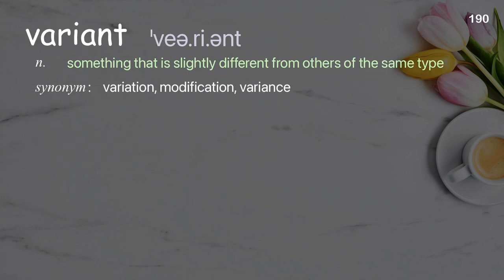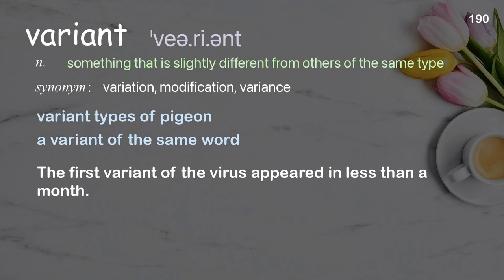Variant: something that is slightly different from others of the same type. Examples: variant types of pigeon, a variant of the same word. The first variant of the virus appeared in less than a month.